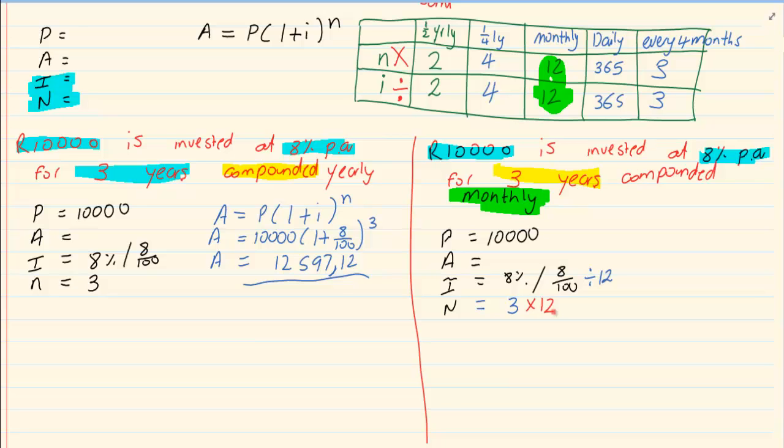Now 8 divided by 100. And then we are going to divide that by 12. It is safer to use fractions in financial math because when you round off too soon, then your final answer is affected. Then we have 3 times 12 which is 36. Now write down your formula. Substitute what we have. In I we are going to put 1 over 150. And in N we are going to put 36.